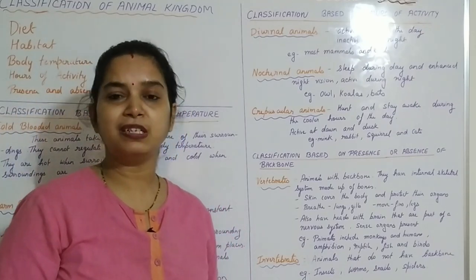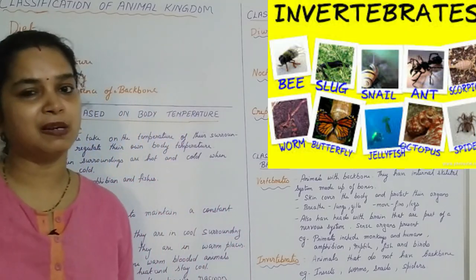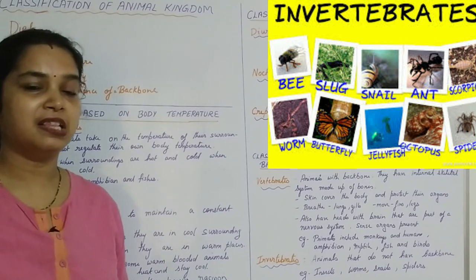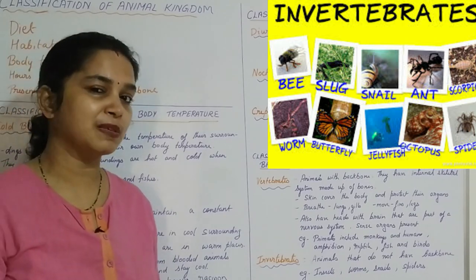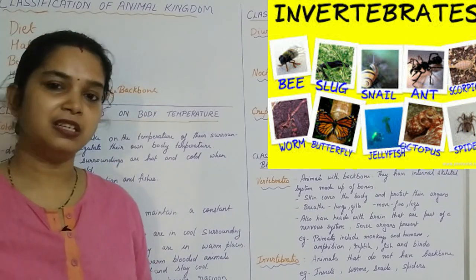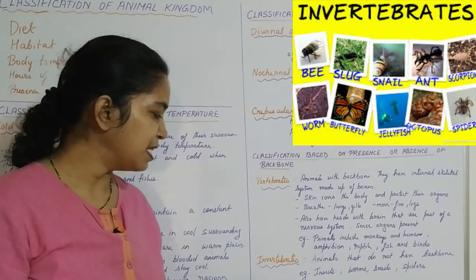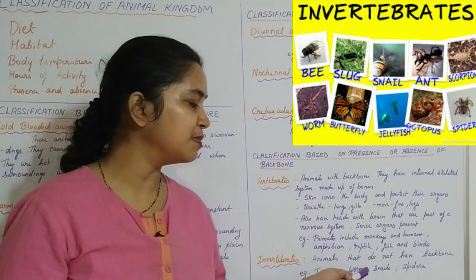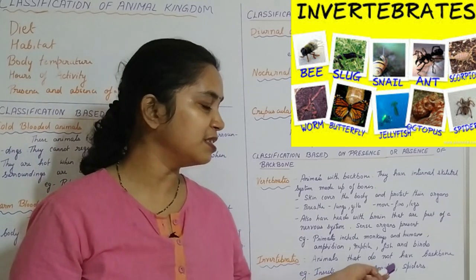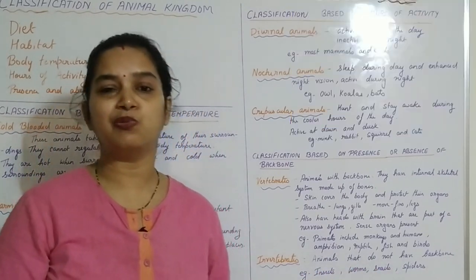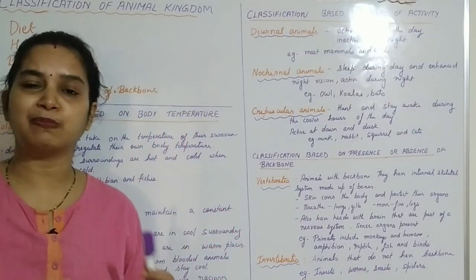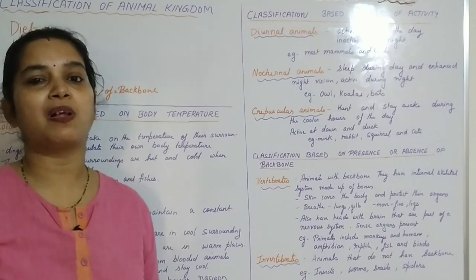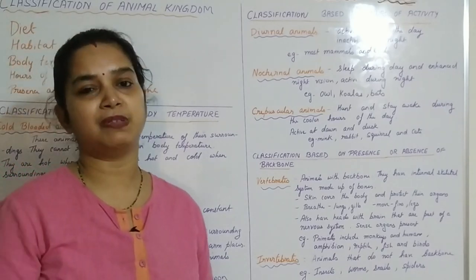Invertebrates don't have a backbone present in the body. They are animals without a backbone, like spiders, insects — all types of insects — worms, and snails. They don't have a backbone and hence are called invertebrates.